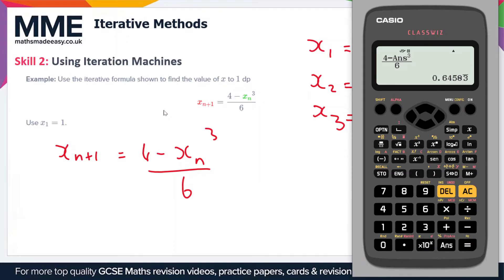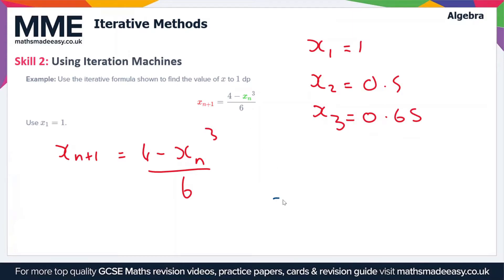We're only looking here for a solution that is to one decimal place, so we just have to keep pressing this equals key until our value to one decimal place doesn't change. If I press this quite a few times the solution has converged towards x equals 0.6. So our answer to one decimal place is x equals 0.6.